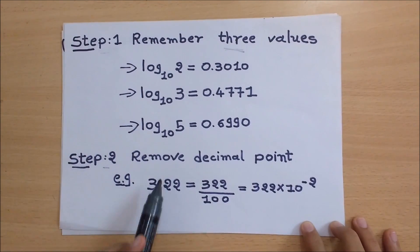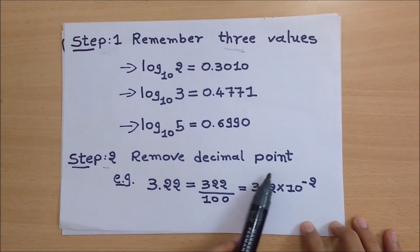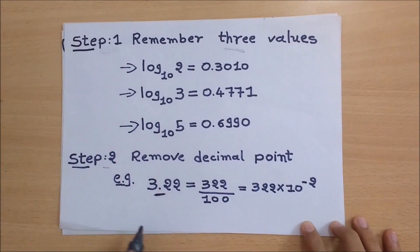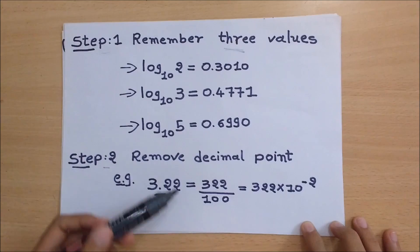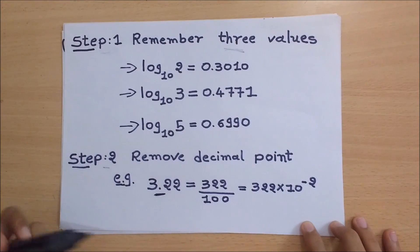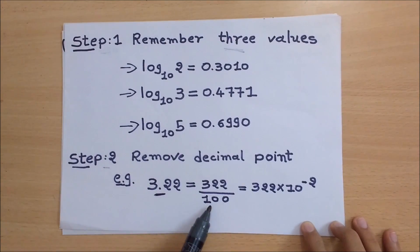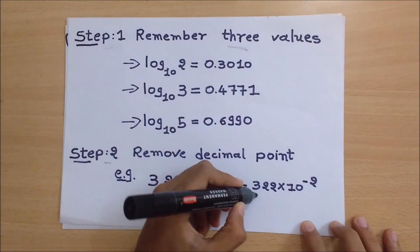Next, remove the decimal point. For example, we can write 3.22 as 322 divided by 100, or 322 into 10 raised to minus 2.